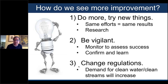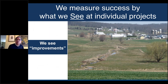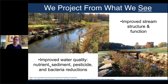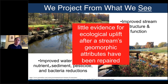One of our challenges is that we measure success by what we see at individual projects — we start with a degraded site and end with an improved-looking one — and from that we assume we got better stream structure and function, better nutrients, sediment, bacteria, and pesticide retention. But we don't measure it. And the data tell us we shouldn't trust what we see — it's not what we see, it's what we measure. Remember: 'little evidence for ecological uplift after the stream's geomorphic attributes have been repaired.' We're not seeing delisting of streams anywhere in the Chesapeake basin.